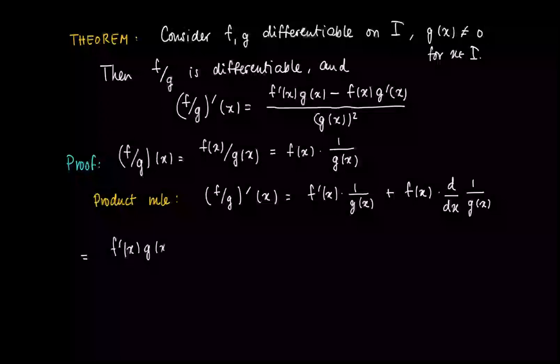So we get f prime times g divided by g squared, plus f of x times minus g prime. Now we can put these two things together and we arrive at the derivative of f times g minus f times the derivative of g, divided by g squared.